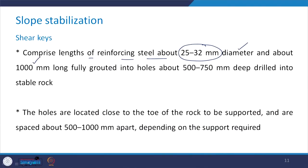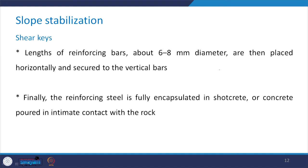Shear keys comprise lengths of reinforcing steel of about 25 to 32 millimeters diameter and about 1 meter long, fully grouted into holes of about 500 to 700 millimeters deep, drilled into the stable rock. These holes are located close to the toe of the rock which is to be supported, and are spaced about 500 to 1000 millimeters apart depending upon the required support system. Lengths of reinforcing bars of about 6 to 8 millimeters diameter are then placed horizontally.